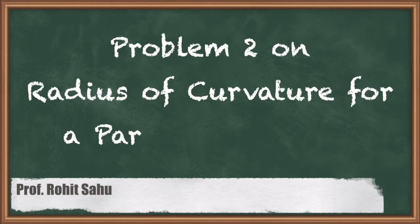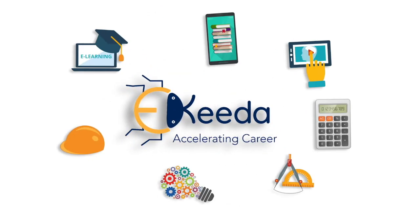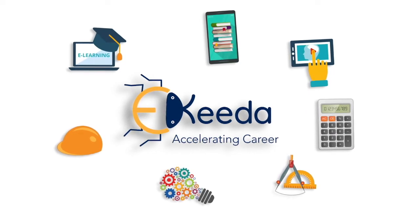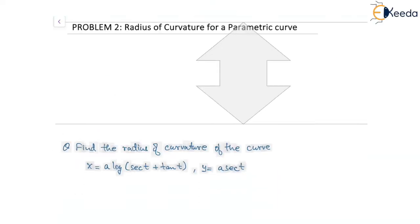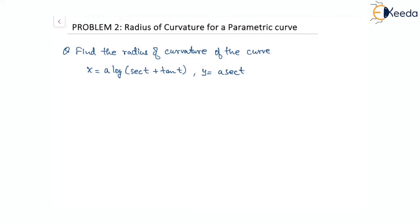In this session we will see another question on radius of curvature for a parametric curve. The question asks us to find the radius of curvature for the curve with x equal to a times of log of sec t plus tan t, and y equal to a times of sec t. Both x and y are functions of a third variable t.